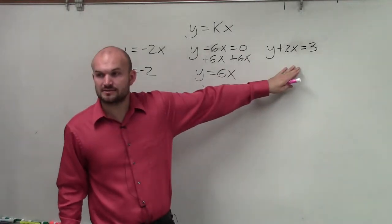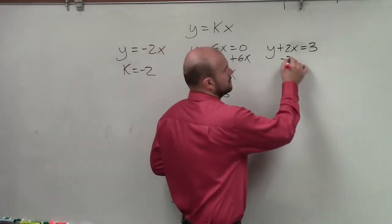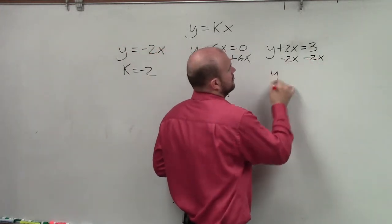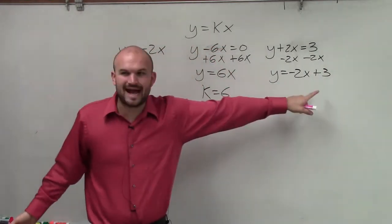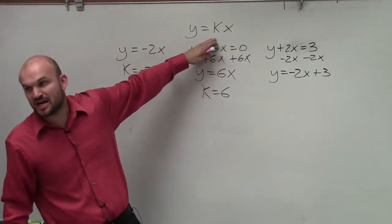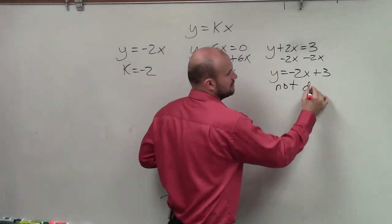Is this in the form of y equals kx? Can we rewrite it in the form of y equals kx? Well, let's try it. And you guys can see, now you're adding a 3. We don't have any addition or subtraction in direct variation. So therefore, this is not direct variation.